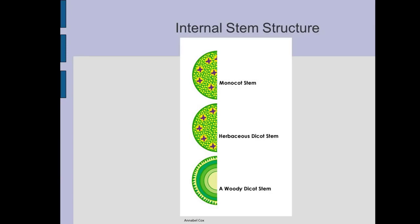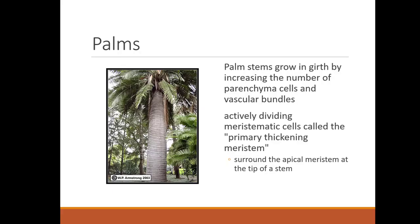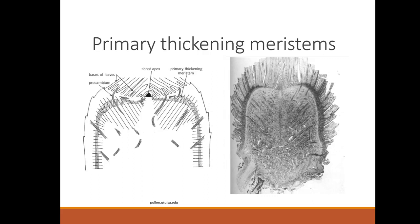In a herbaceous dicot stem, the vascular bundles are around the edges, and in a woody dicot stem they appear as rings. Palms look like they've got trunks — they grow in girth by increasing the number of parenchyma cells and vascular bundles. They have actively dividing meristematic cells called the primary thickening meristem, which surround the apical meristem at the tip of the stem.